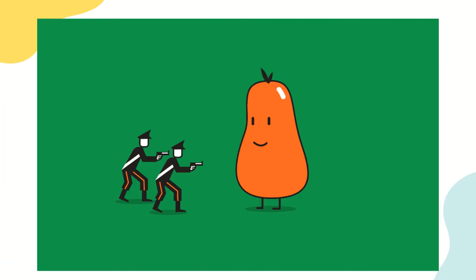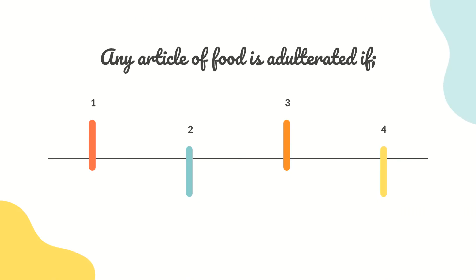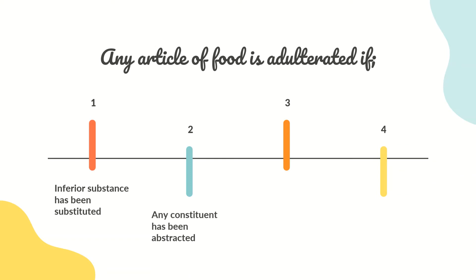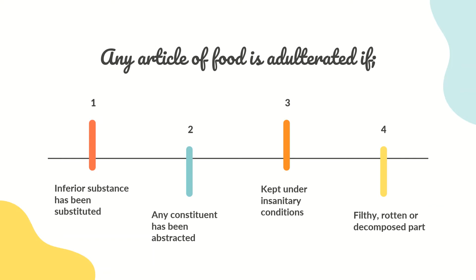Any article of food is adulterated if the food product contains any inferior substance, if any inferior substance has been substituted, or if any constituent has been extracted from the commodity. Next, food is adulterated if it is prepared or packaged under insanitary conditions, or if the article consists in part of any filthy, rotten, or decomposed material.